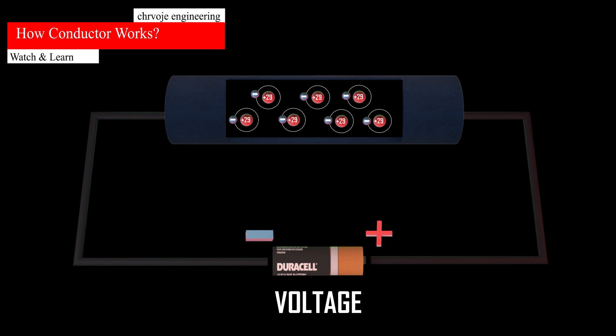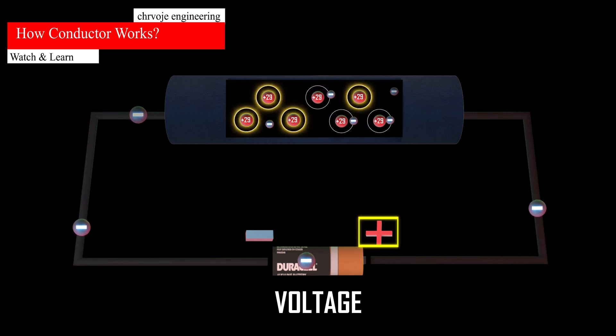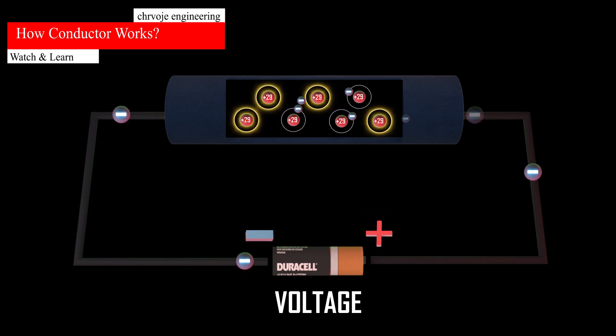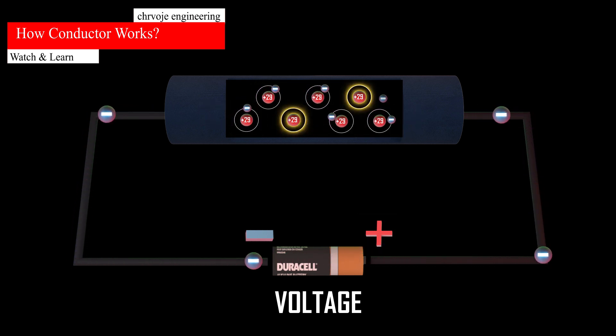When a voltage is applied to the copper wire, the electrons can be directed through the wire with the electrons moving towards the positive end of the source voltage. This movement or flow of electrons in one direction is called electron current flow or just current.